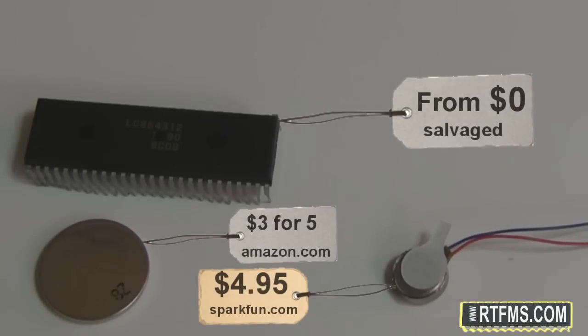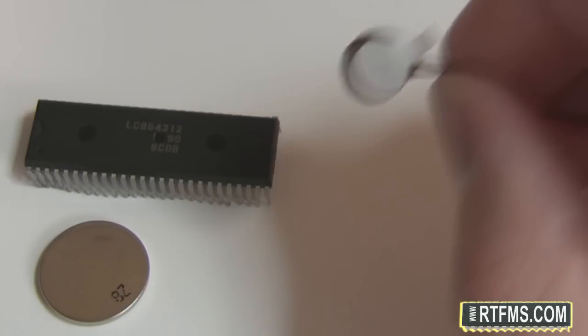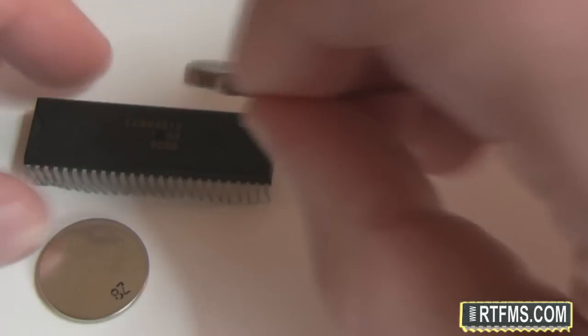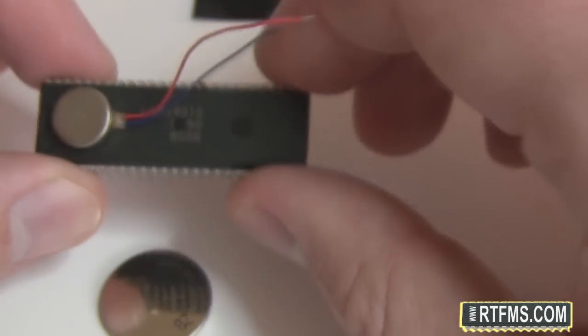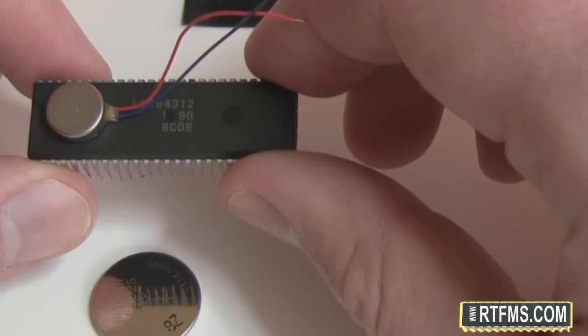Let's start building our robot by attaching the vibration motor to the microchip. If you've got the fresh motor, you should already have the adhesive. Just remove the protective film and stick it to the chip. Like that. If it doesn't have the adhesive, you can use electrical tape or a tiny drop of glue.